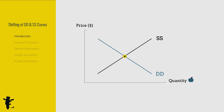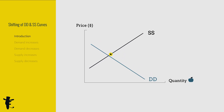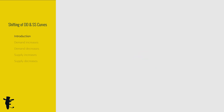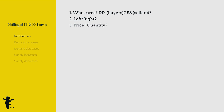The market equilibrium changes all the time, as demand and supply conditions change. How do the curves shift? First, we got to know who cares — buyers or sellers? Which direction does the curve shift? How does price and quantity change?